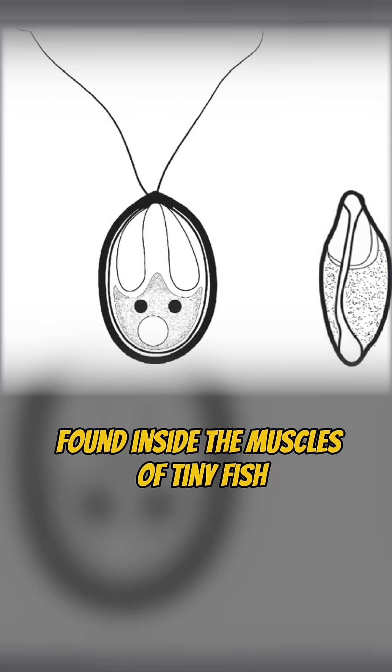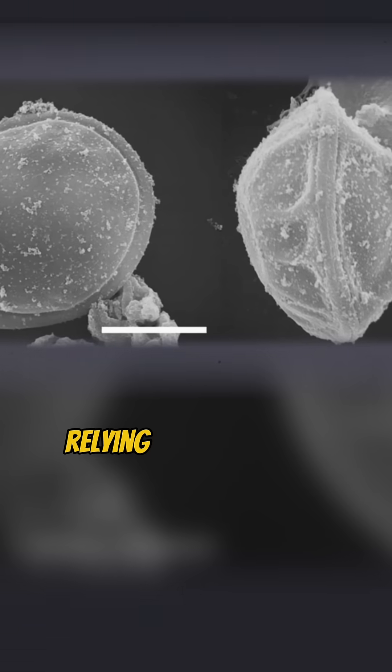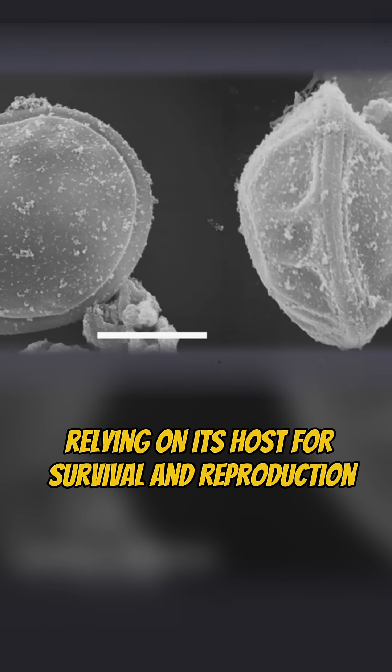Found inside the muscles of tiny fish, Myxobolus shekel lives an invisible life, relying on its host for survival and reproduction.